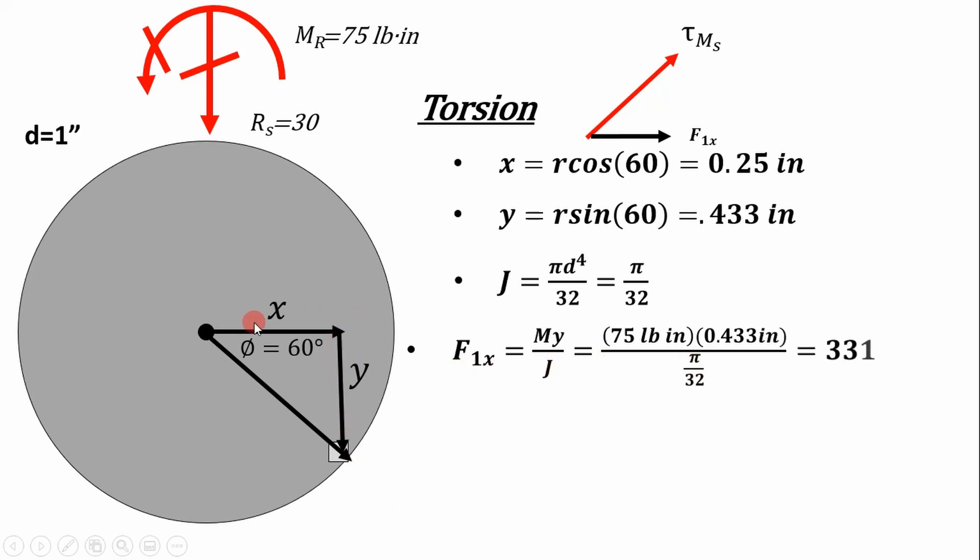It's simply going to be your moment times the y distance to the element over your polar moment of inertia. And if you remember, this moment is going to always act perpendicular to the distance vector. So in this case, if we point down in the y direction, our shear stress is going to be going in the x direction. For the x vector distance, it's going to be going in the y direction.